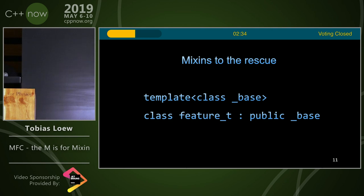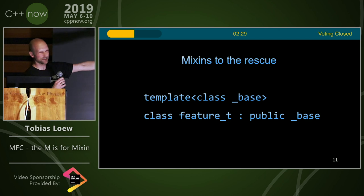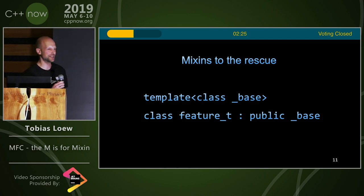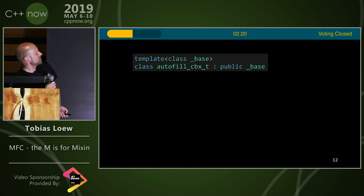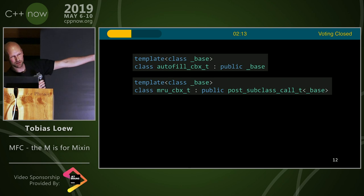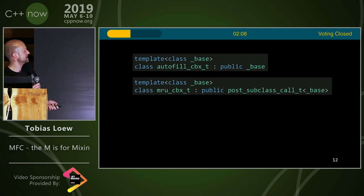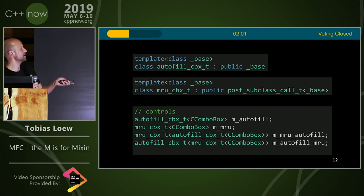What can we do? We can turn to mix-ins for the rescue. For those who have never heard of mix-ins: you take the base class, take a template parameter, and put it in as your first base class. You make an AutoFill combo box type and an MRU combo box type — which in my case also has itself a mix-in from some helper class.